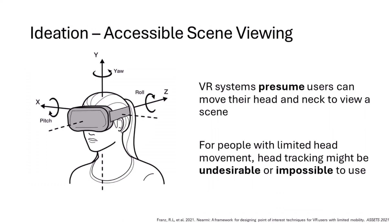Another use case of our taxonomy is as an ideation tool. We used the taxonomy to envision three new scene viewing techniques that could be helpful to people with limited head or trunk movement. VR systems often presume users can move their head and neck to view a scene, but that might be difficult or impossible for some people to perform. Thus, we need new scene viewing techniques to accommodate these users' needs.